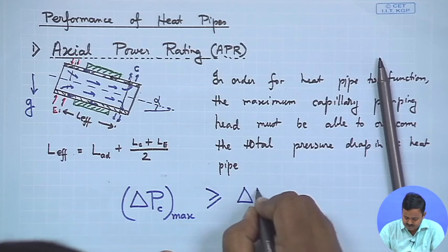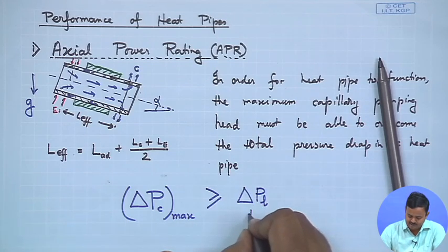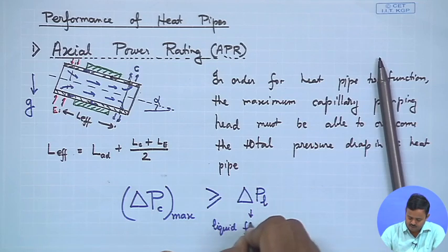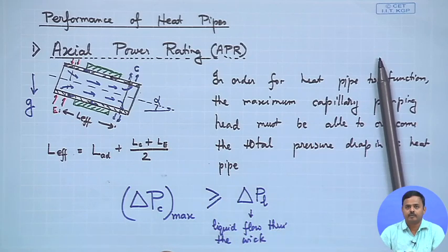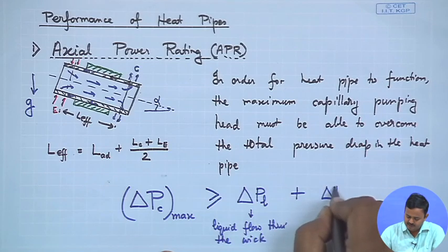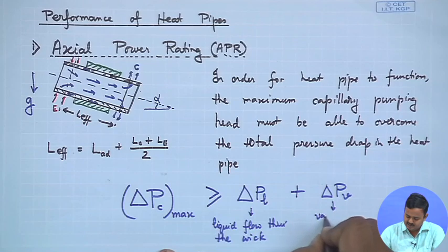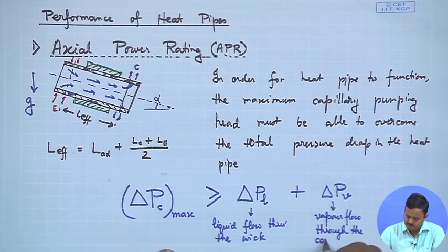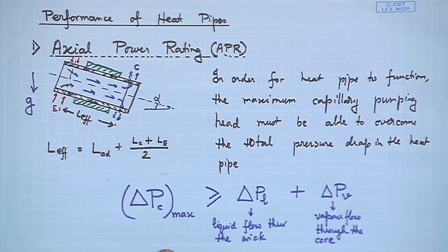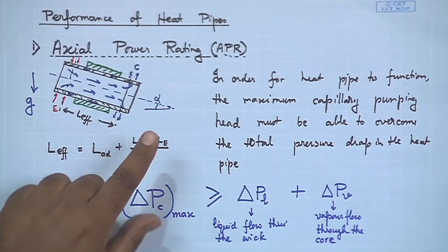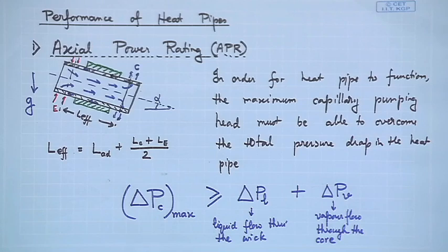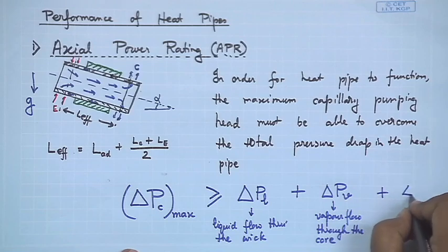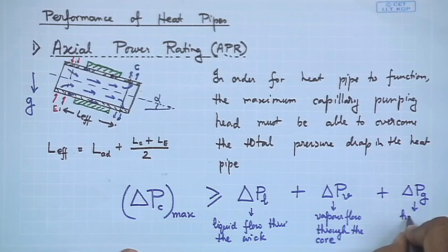The first pressure drop term is ΔP_l, which is the pressure drop for liquid flow through the wick. Then there is ΔP_v for vapor flow through the core. There is also a hydrostatic head due to gravity — this is where the inclination alpha that was deliberately introduced comes into the picture. We call this ΔP_g, the hydrostatic head.